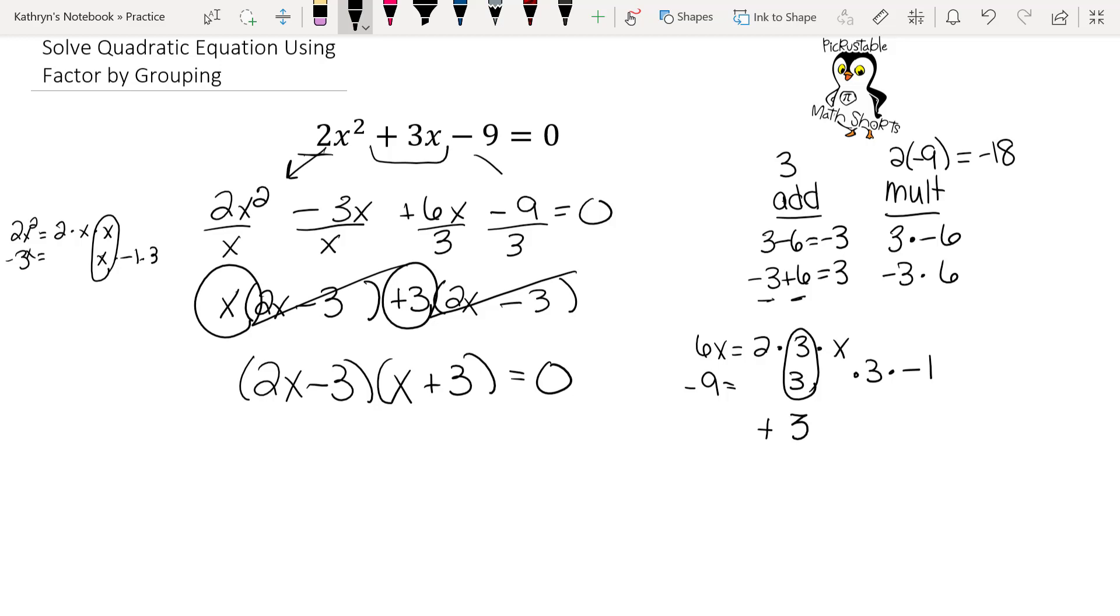But we need to keep going because we're trying to solve this. So everything that has an x, we're going to make it equal to 0. So let's solve. I'm going to add 3 to both sides. So 2x equals 3. I'm going to divide by 2 on both sides of the equal sign. So I end up with 3 halves.